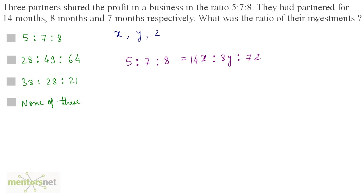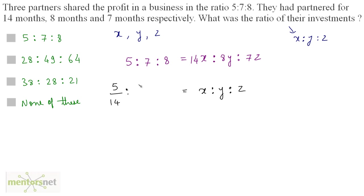What we want is the ratio of their investments, which means we want x is to y is to z. Now we have an equation here and we can convert it. So we can write x is to y is to z as equal to 5 by 14 is to 7 by 8 is to 8 by 7. These terms go appropriately to their left-hand side.